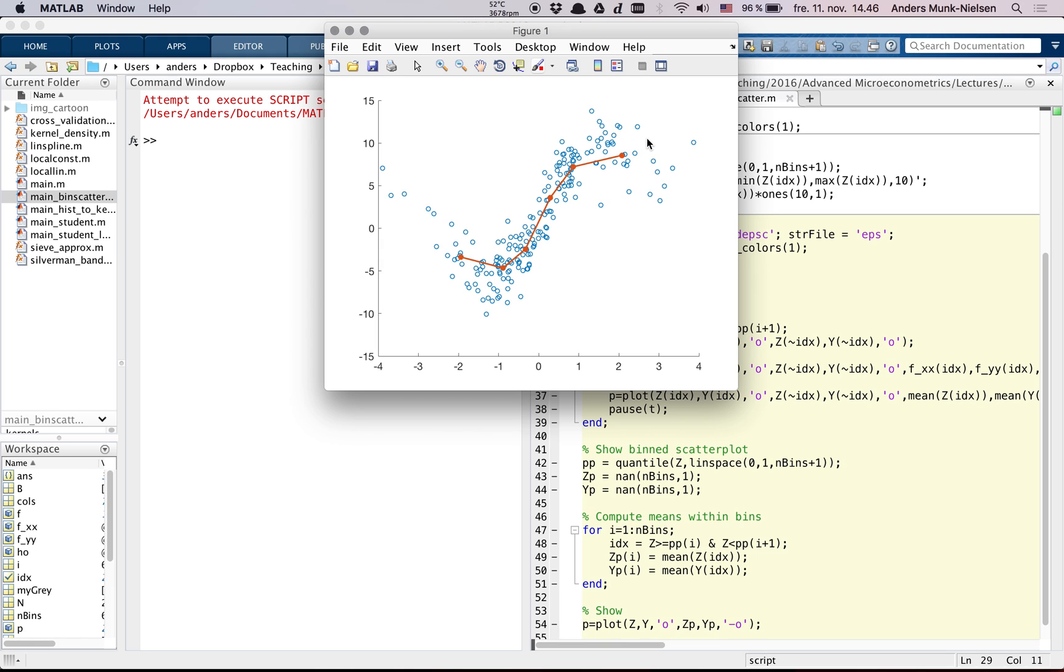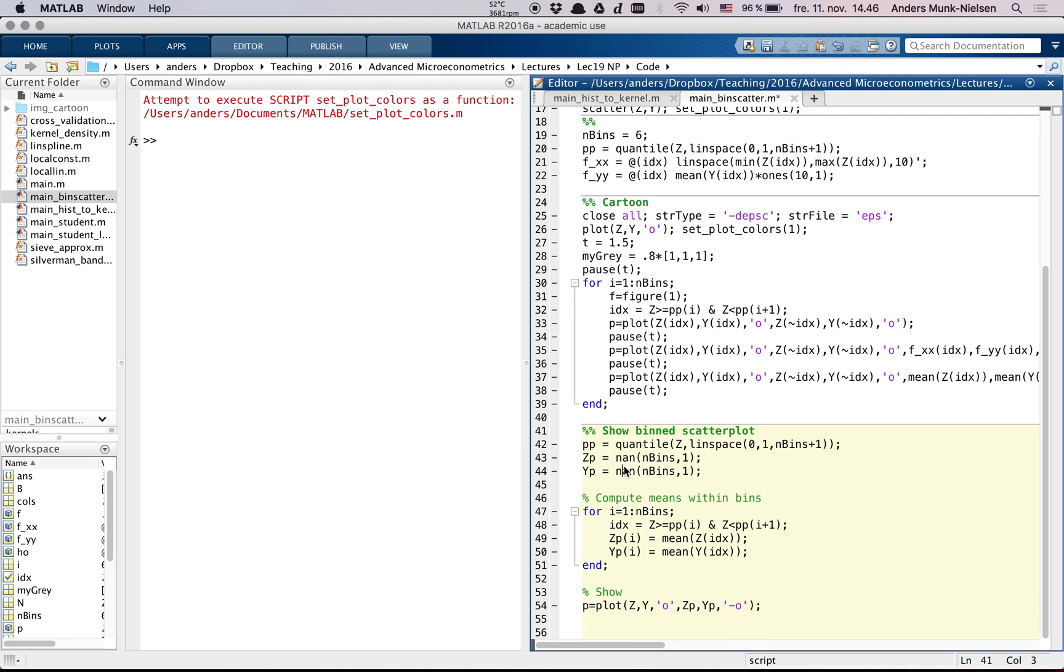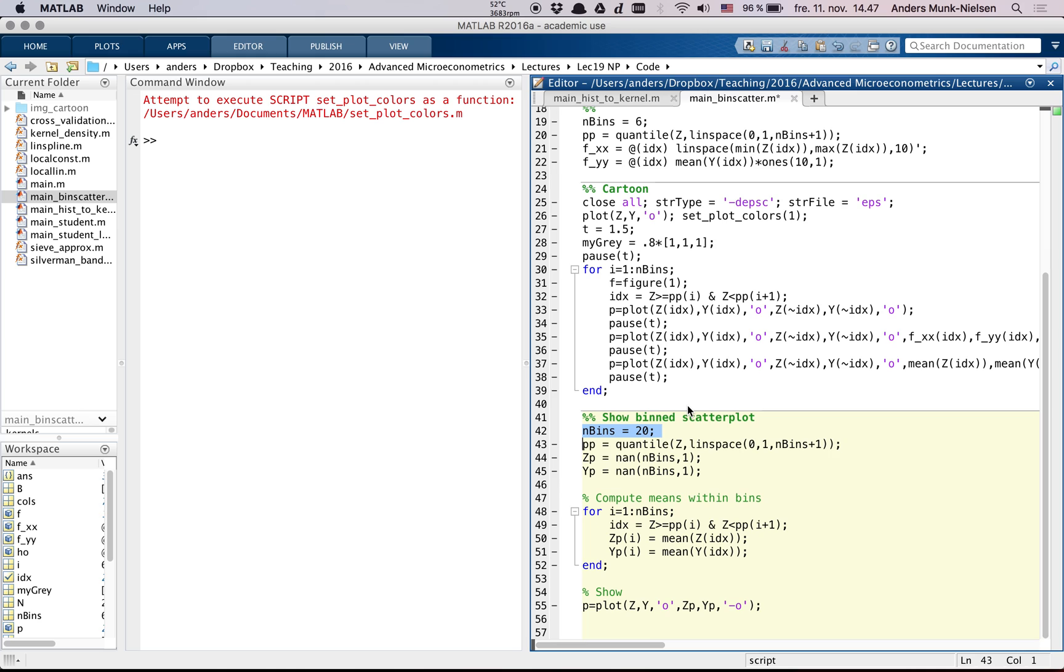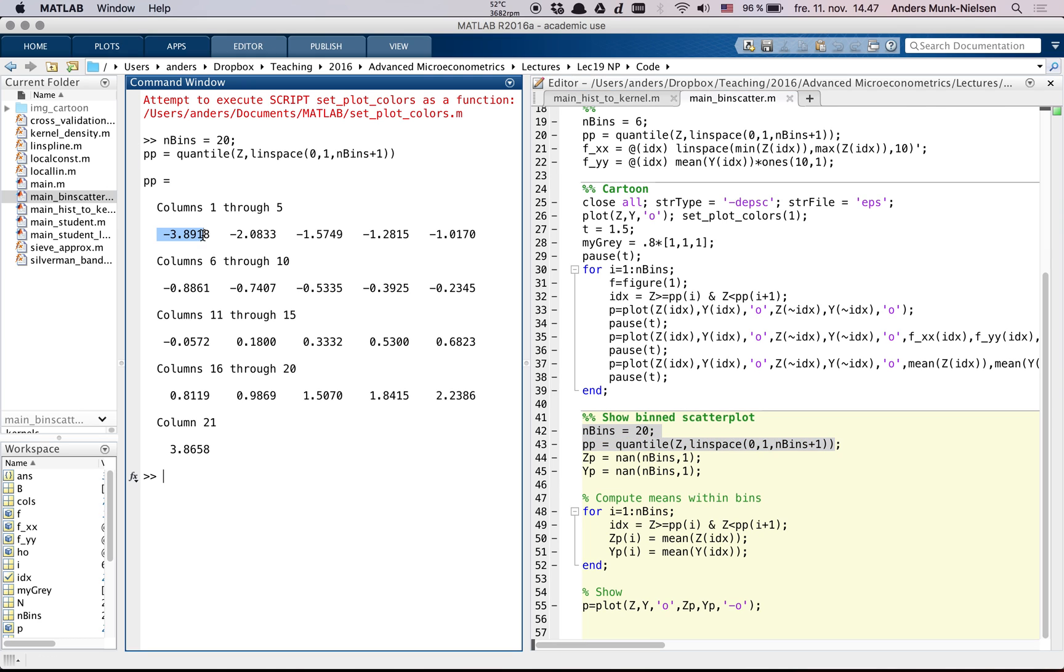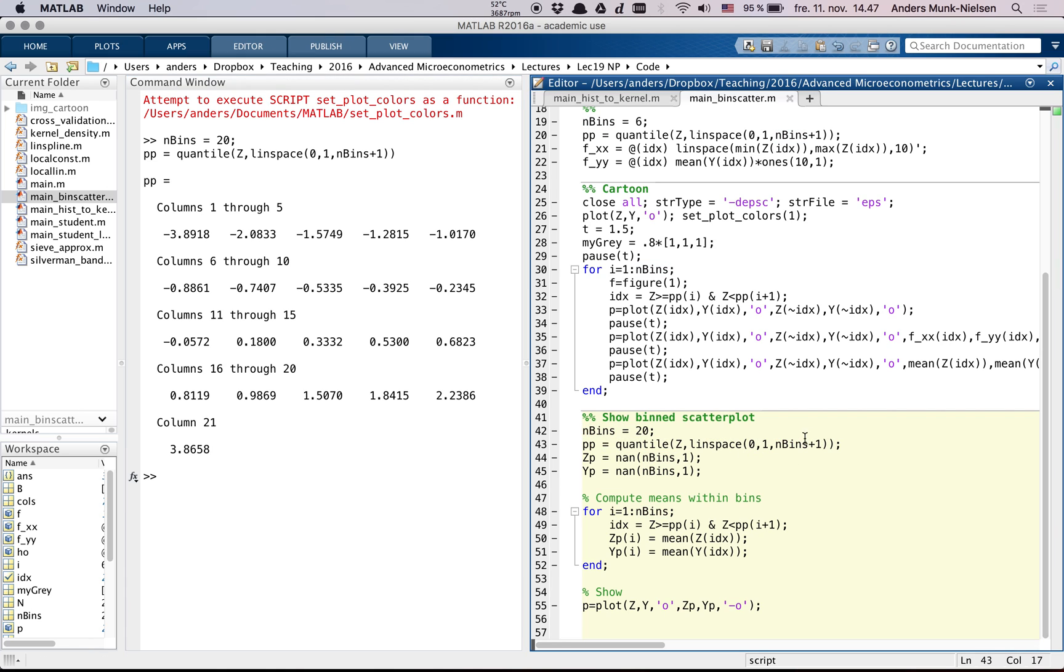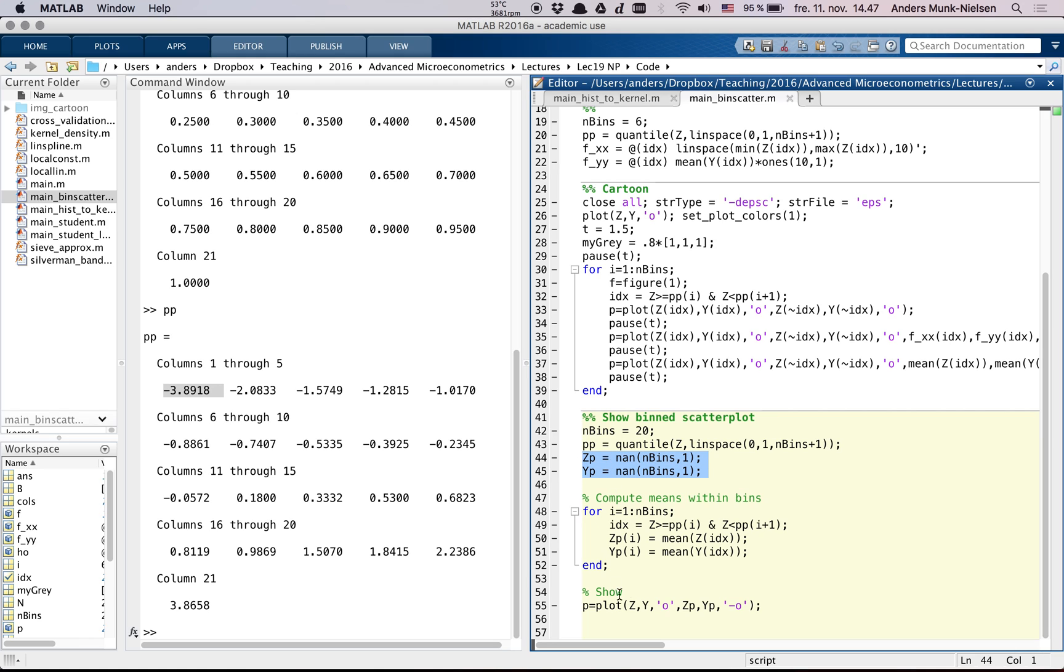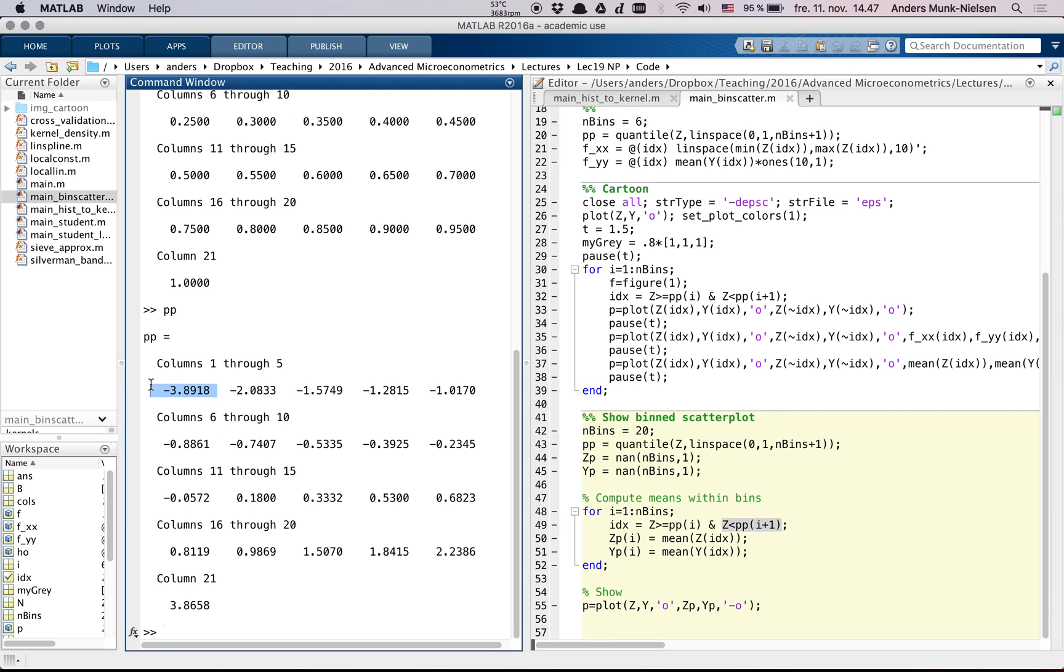At the end we connect them with a line. This is what's known as a binned scatter plot. It's really quite simple what it does: you tell it the number of bins you want, let's say we want to use 20 now. Then it creates this thing called pp which is the 21 quantiles of the explanatory variable. As you can see it goes from 0, 0.05 quantile, 0.1 quantile and so on. Then for each of the bins we find the data that belongs to that bin, so the data that has z greater than pp of i and smaller than pp of i plus one.